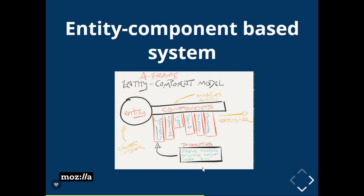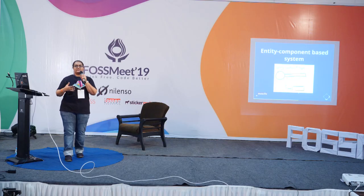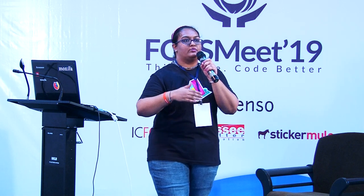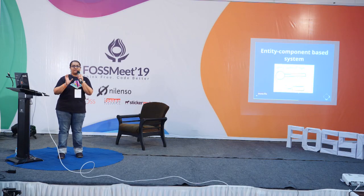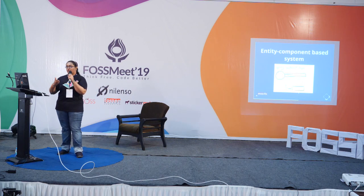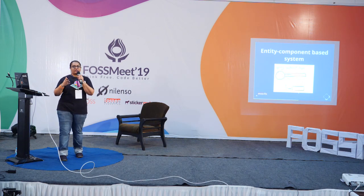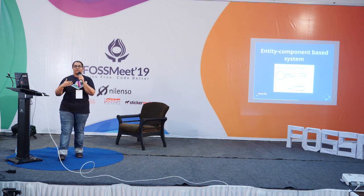The basic system in A-Frame is the entity component based system. For instance, there is a ball — A-Sphere is my ball — and if I add a feature like bouncing or a color to it, it becomes an entity component based system. There are very few predefined components already in the registry, but if you want to define your own objects, you can go to A-Entity, make the changes you want, and bring it back the way you want it. That is how you customize everything.